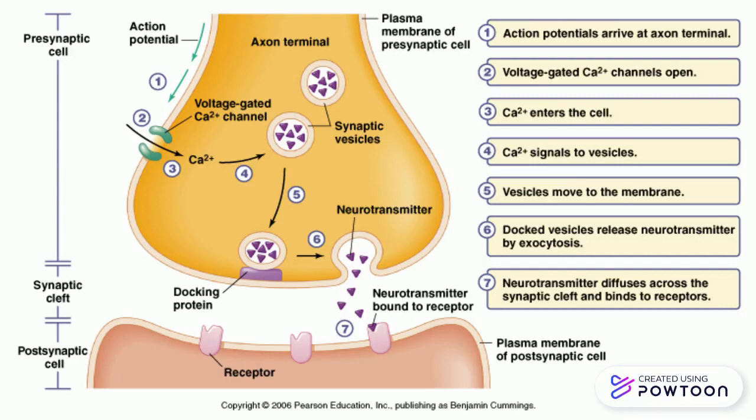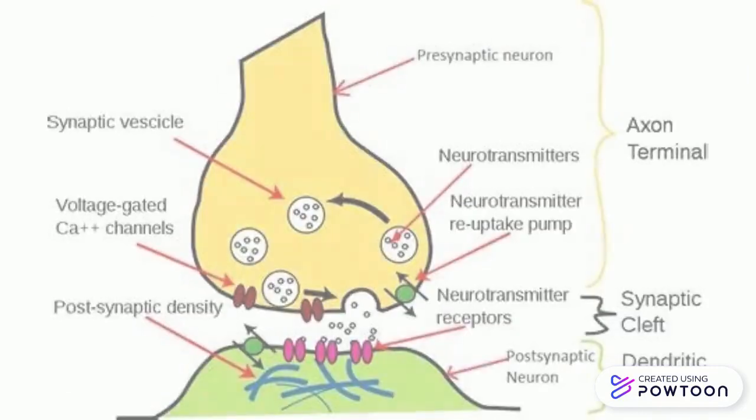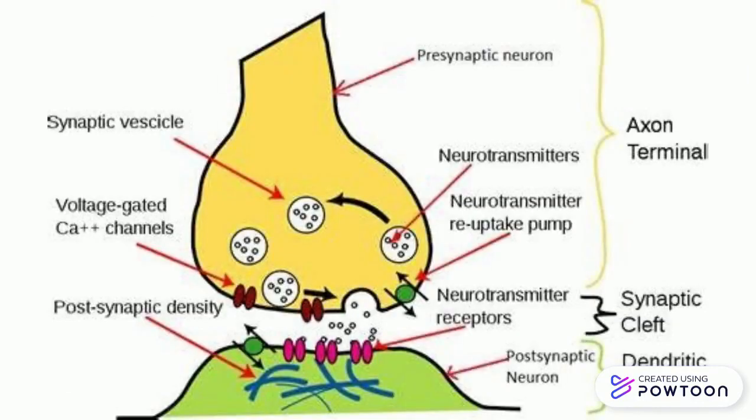This surge of calcium activates the neurotransmitter to release information by exocytosis. Once the neurotransmitters release the information by exocytosis, the transfer is complete between the synapses, and the process starts all over again.